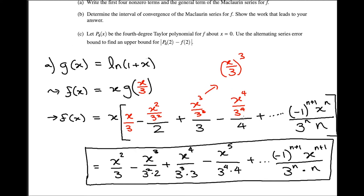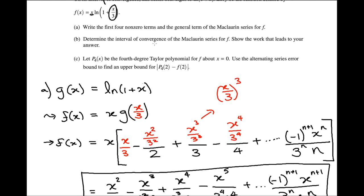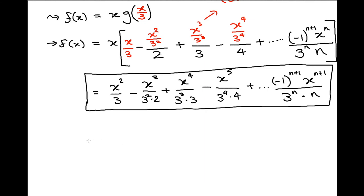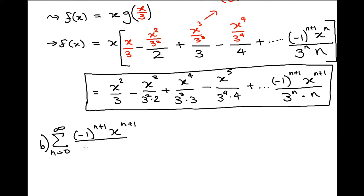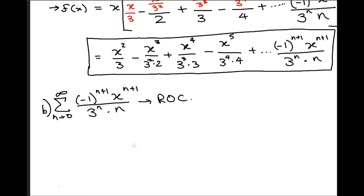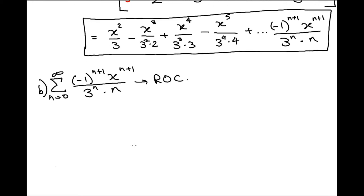All right, so now let's take a look at what part b is asking for. Part b says to determine the interval of convergence of the Maclaurin series for f, which we just found, and show the work associated with that. Basically it's asking for the interval of convergence of the infinite sum from n=0 to infinity of (-1)^(n+1) · x^(n+1) / (3^n · n). Typically whenever we're looking for radius of convergence, we like to do either a root test or a ratio test, because those give us a very nice radius to work with.